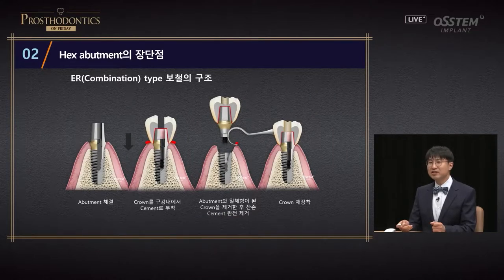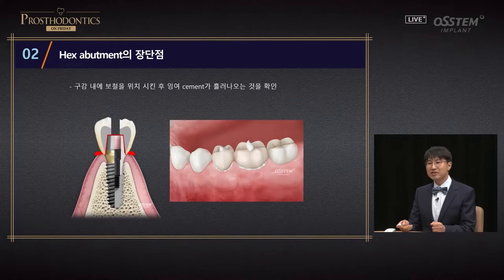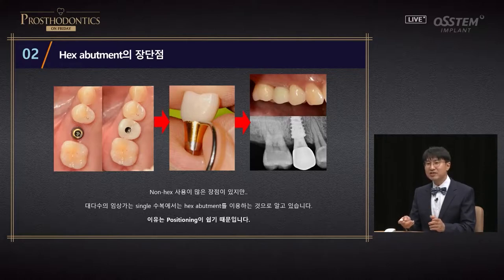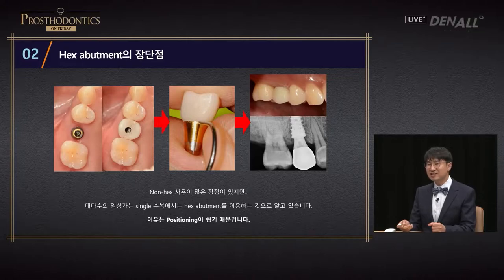Another benefit of hex: when you fabricate ER type, you can cement the prosthesis. After you remove it, you can remove the cement and then reposition it. In single tooth restoration, repositioning a non-hex abutment will be very difficult. This is a major advantage of hex abutment.